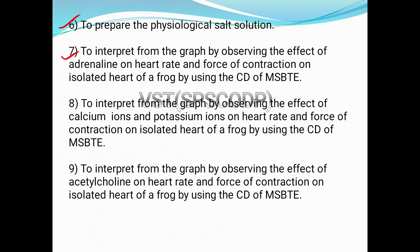The seventh experiment is to interpret from the graph by observing the effect of adrenaline on heart rate and force of contraction on the isolated heart of a frog using the CD of MSBT. You have to watch the video of this effect, study it by observing the graph, and also study action potential and its different phases.